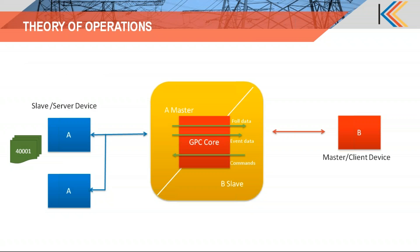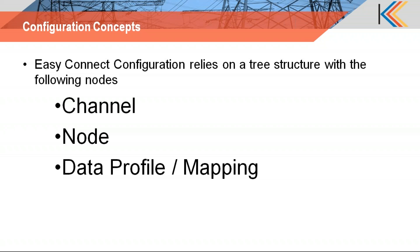That is the basic theory of operations for a protocol gateway. I'll next go to the actual configuration part. To configure Kalki devices we have a software called Easy Connect Configuration, which is shipped along with our devices. Easy Connect Configuration relies on a tree structure and has the following branches: the main branch is the channel, then a node, then something called a data profile or data mapping.